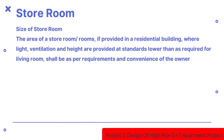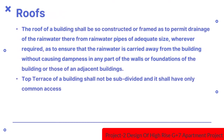The area of a store room, if provided in a residential building where light, ventilation and height are provided at standards lower than required for living rooms, shall be as per requirements and convenience of the owner. The roof of a building shall be constructed to permit drainage of rainwater, with rainwater pipes of adequate size to ensure rainwater is carried away without causing dampness in any part of the walls or foundation. The top terrace shall not be subdivided and it shall have only common access.